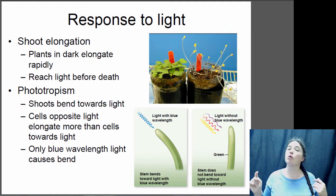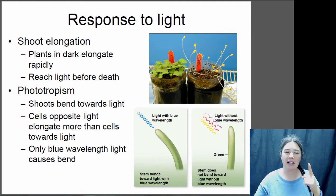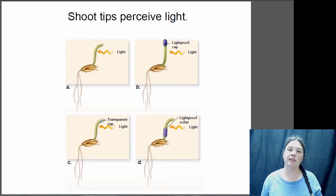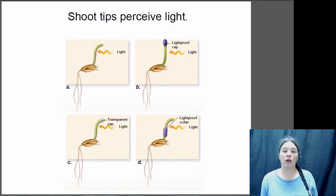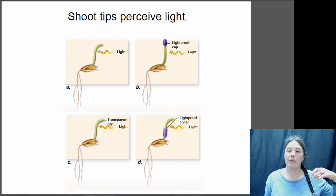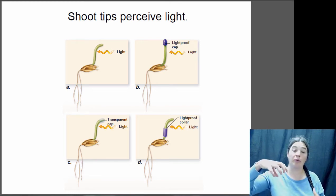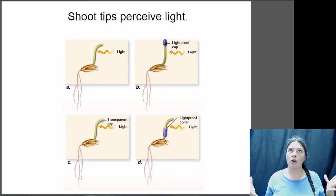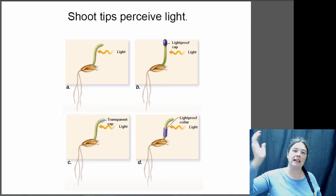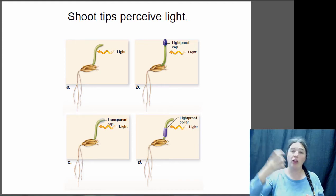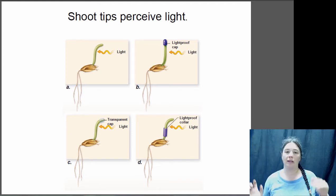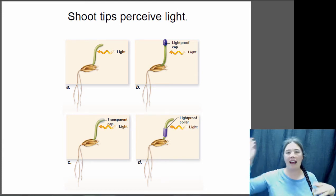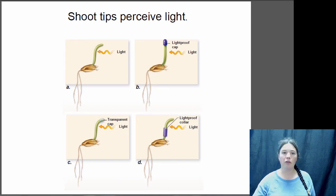It turns out that only the blue wavelength triggers that bending, and it's actually the tip of the shoot that determines where the light is coming from. In an experiment to find what part of the plant detects light: putting a light-proof cap on the tip meant the stem did not bend; a transparent cap allowed bending; and a light-proof sheath halfway down the stem still allowed bending. This confirms that light must be detected at the tip of the stem for the bending behavior to occur.